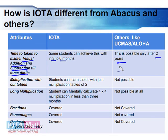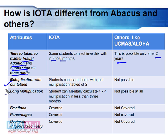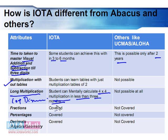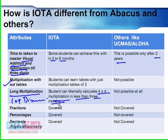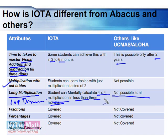Now you can understand why IOTA is superior to UC Maths and Aloha. Our students can perform much faster than others. One more unique feature of IOTA is multiplication without tables — students learn all multiplication tables using just the multiplication table of two, which is not possible in other systems. Students can also do long multiplication and long division mentally, without any tool, for four-digit by four-digit calculations. They can achieve this in around three months for multiplication and three months for division — fully equipped within six months. In other systems, this is not possible, or it takes around three years.